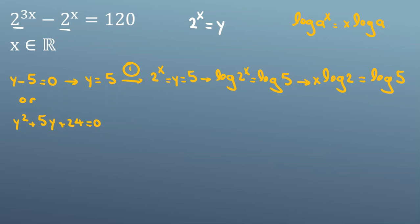The logs should have the same base, like ln for base e or any other base. Dividing both sides by log(2): x = log(5)/log(2). So one answer is x = log(5)/log(2). Now we focus on the second case with the quadratic formula.